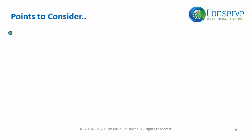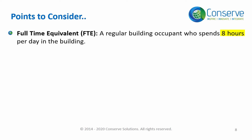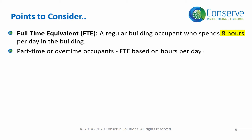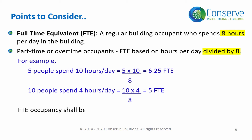FTE is an abbreviation of full time equivalent. It represents a regular building occupant who spends 8 hours per day. Part time or overtime occupants have FTE based on their occupancy hours divided by 8. For example, if 5 people spend 10 hours per day, the FTE is 6.25. If 10 people spend 4 hours per day, the equivalent FTE is 5.